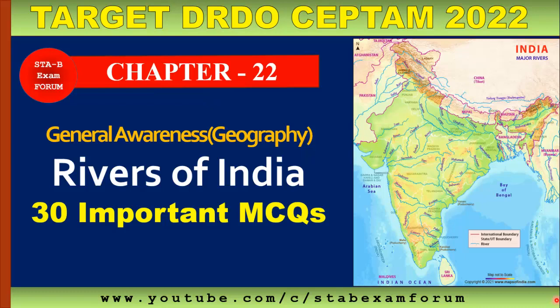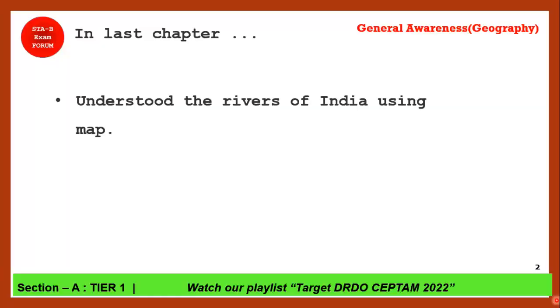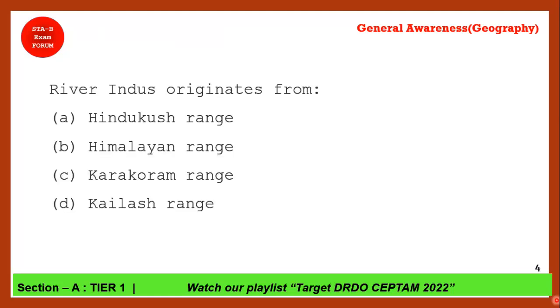Welcome to STB Exam Forum. We have come up with a new chapter, chapter number 22. In this video we are going to see 30 important multiple choice questions on Rivers of India. In the last chapter we understood the rivers of India using a map, so if you haven't watched that video I recommend you watch it — it's available in our playlist 'Target DRDO September 2022'. Now let's begin.